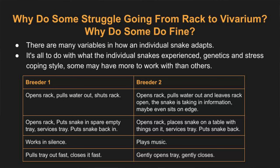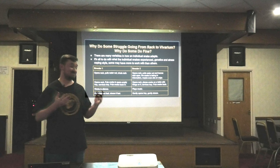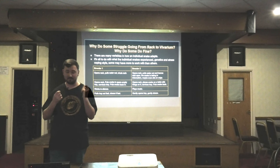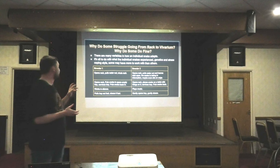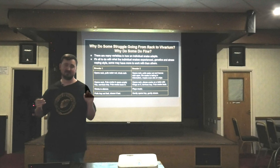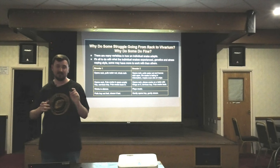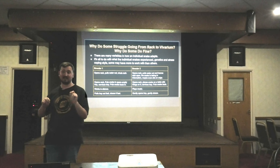So why do some royals struggle going from a rack to a vivarium while others do fine? It's because of so many different variables — the individual snake's experiences, its genetics, and its stress coping style. Some may have more to work with than others based on past experiences, neural pathways, and learning opportunities. For example, consider two breeders who keep in the exact same rack — same brand, same dimensions, same shavings, same water bowl, same temperatures. The conscious setup is identical, but subconsciously the way they work is entirely different.